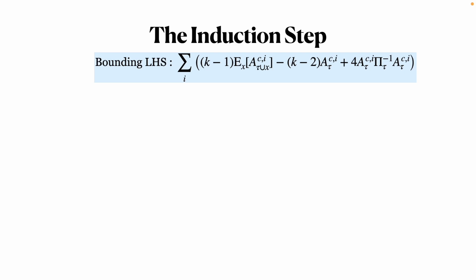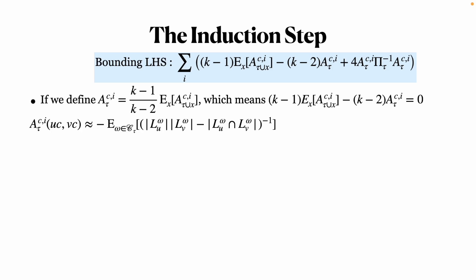If we define A recursively in this form, it allows the two terms to cancel each other, and the entries in A will be negative expected value of 1 over the available coloring on U and V, where LU denotes the list of available colors on U after pinning ω.